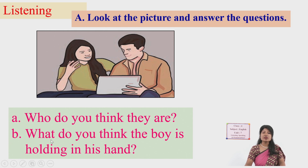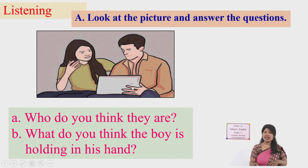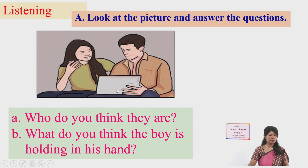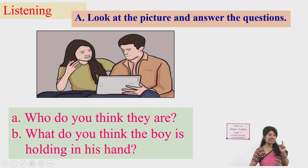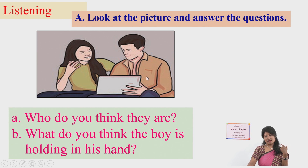Let's move to question B. What do you think the boy is holding in his hand? As you can see in the picture, the boy is holding something. Is it a book? It doesn't seem like a book. Is it a mobile? No — it's bigger than a mobile. Maybe it is some digital device. Maybe this is an iPad.